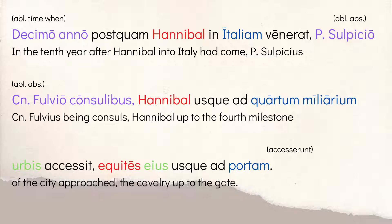It starts by saying decimo anno, which is ablative of time when — so 'in the 10th year.' It's the 10th year after Hannibal had come into Italy; venerat is pluperfect tense. Then he gives another timing phrase with an ablative absolute: Publio Sulpicio and Gnaeoque Fulvio being consuls. This is a very common Roman way of identifying the year by naming who the consuls were.